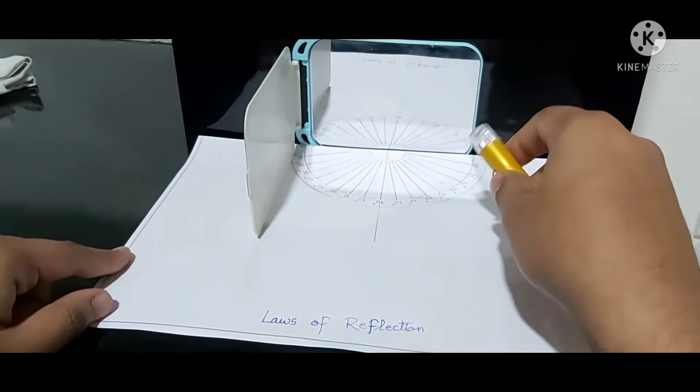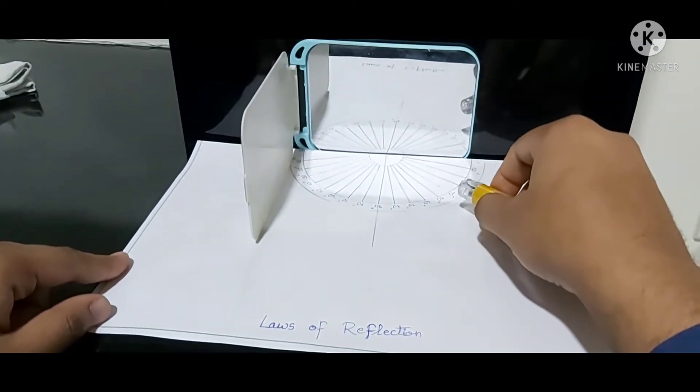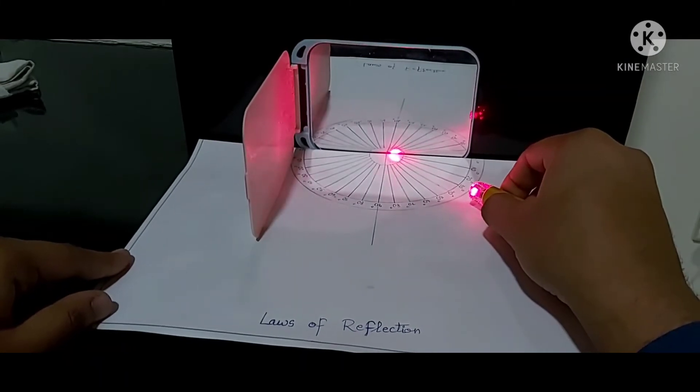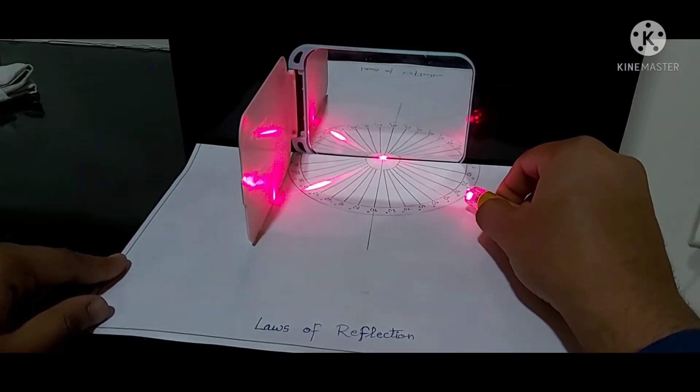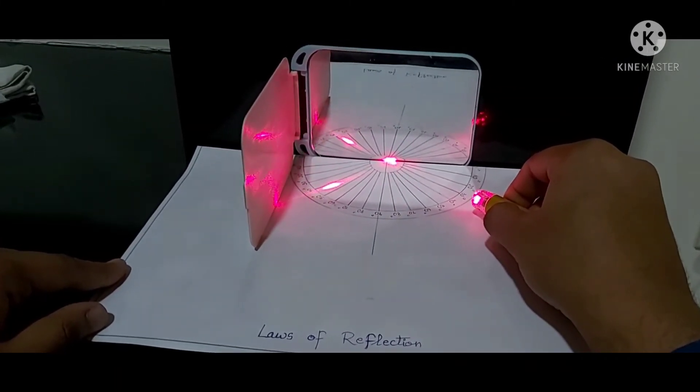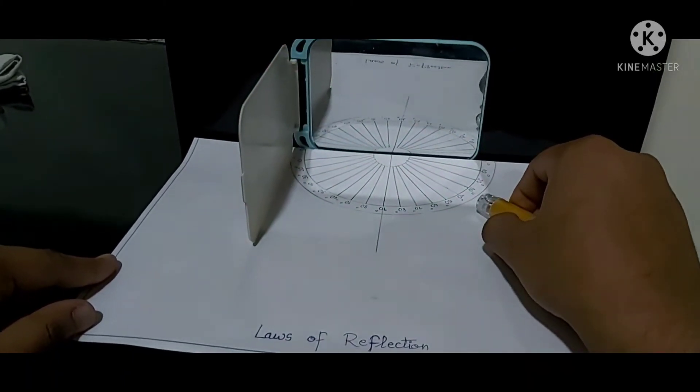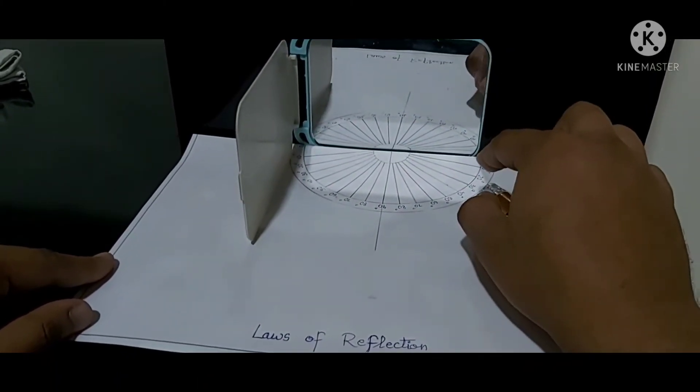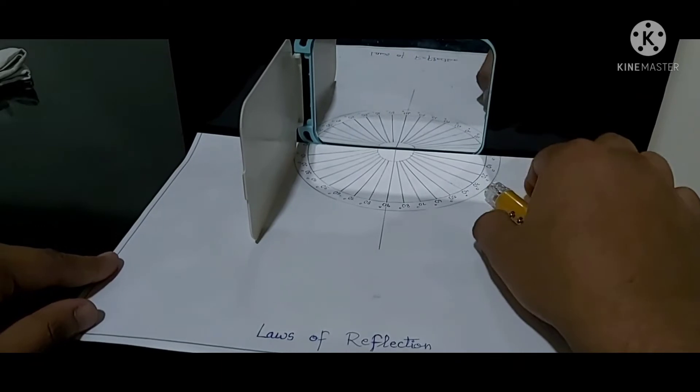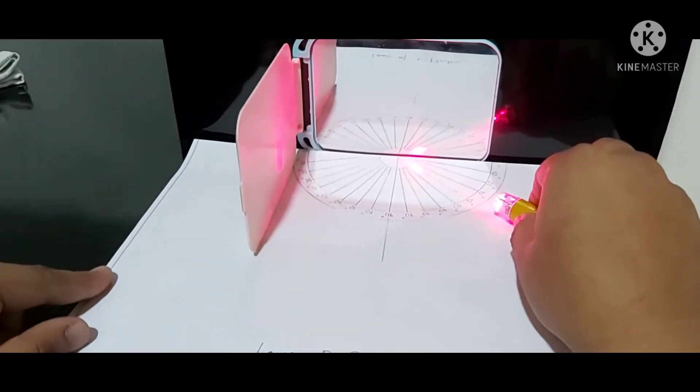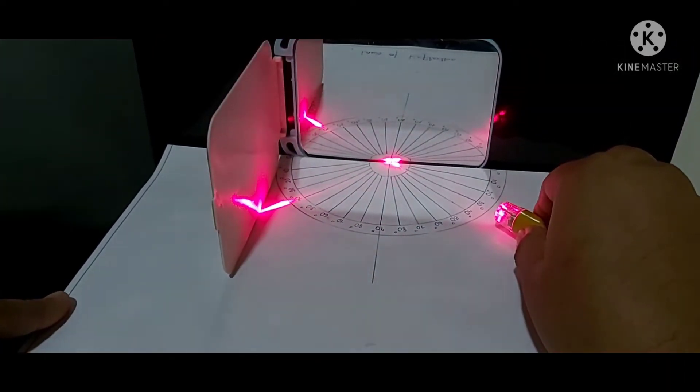Now you see I am having a laser light. I will point it at 40 degrees. We are getting a reflection at 40 degrees. So this is the first law: the angle of reflection is equal to angle of incidence. Here this is the incident ray which I am focusing, and this is the reflected ray.